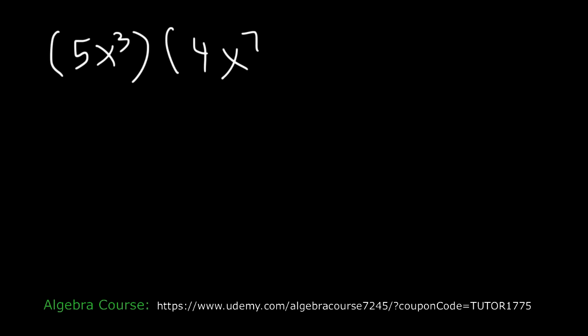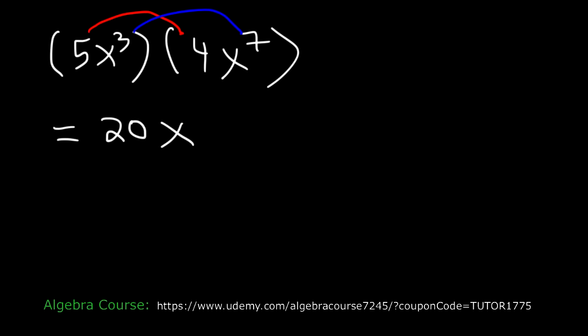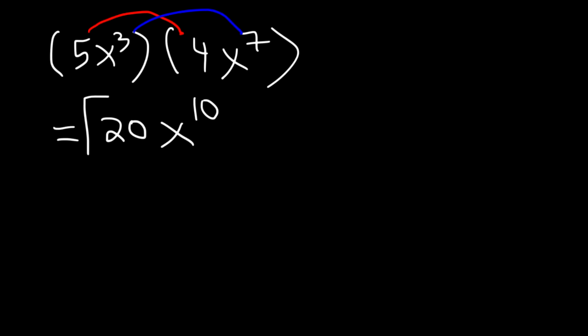What is 5x cubed multiplied by 4x to the 7th power? First, multiply 5 times 4, which is 20. Then multiply x cubed times x to the 7th: add the exponents, 3 plus 7 is 10. So this is simply 20x to the 10th.